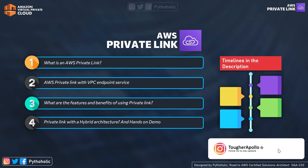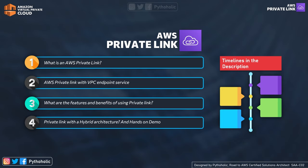In today's session of AWS, we will talk about what is AWS Private Link, and we will discuss the relation between AWS Private Link and the VPC endpoint service, and what are the features and benefits of using a private link, and we will also check how Private Link works with a hybrid architecture, and a small hands-on demo as usual. The timelines are in the description as well.